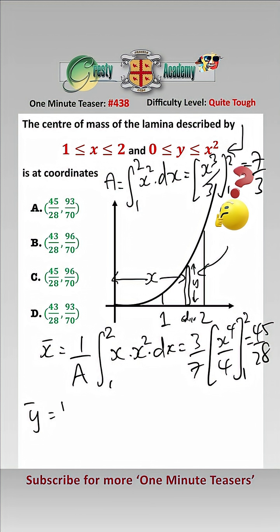Now let's have a look at the y coordinate. y bar is 1 over a the integral between 1 and 2 of, well y, the centre of mass of that strip will be at y over 2. So it will be y over 2 times x squared dx.